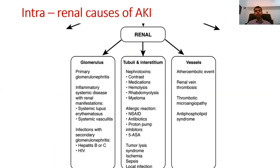Moving on to intrinsic renal causes of AKI, we can divide them depending on which part of the kidney is affected: the glomerulus, the tubules and interstitium, or the blood vessels. Depending on the site affected, there are different causes and clinical manifestations. Primary glomerular diseases or inflammatory conditions such as lupus and systemic vasculitis can affect the glomerulus and give rise to acute kidney injury.